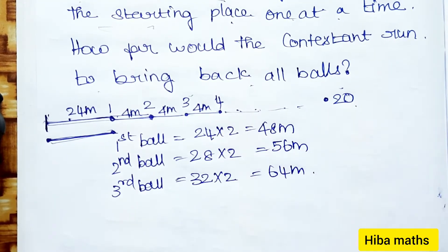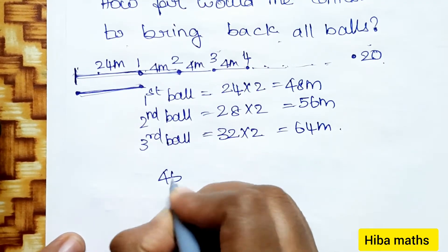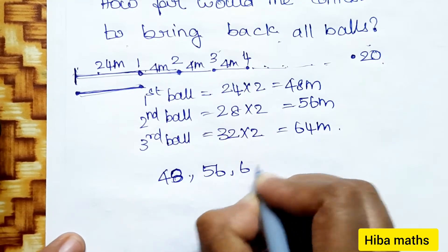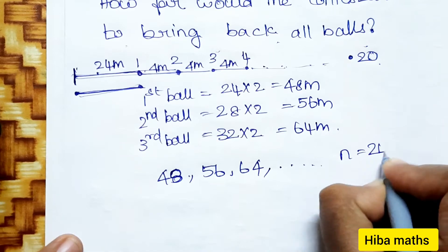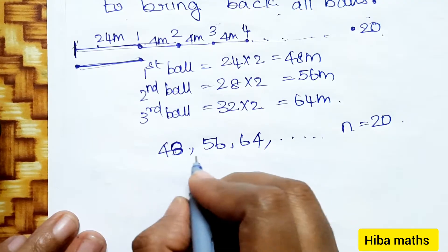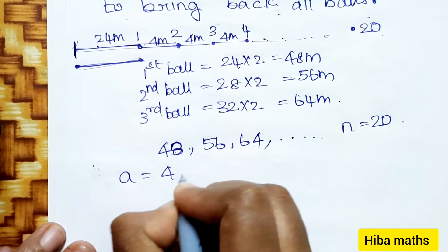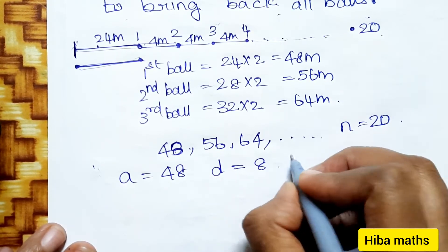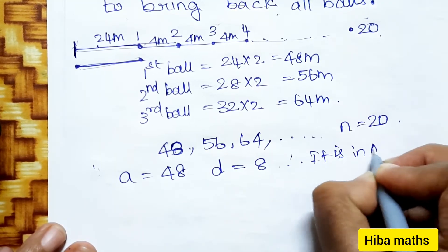So we need a series up to 20 terms: 48, 56, 64... up to 20 terms. Here n = 20. The common difference is 8, 8, 8 — so this is an Arithmetic Progression (AP) with first term a = 48 and common difference d = 8.